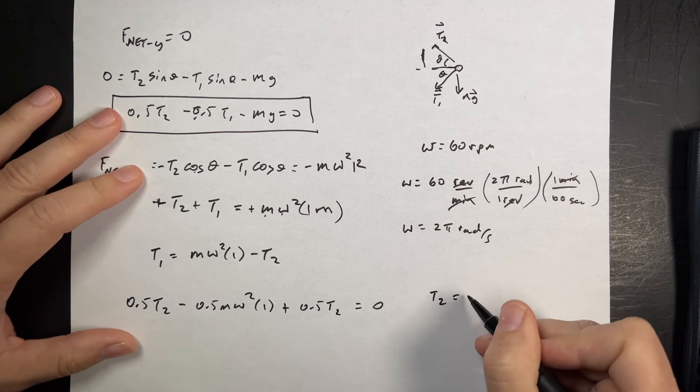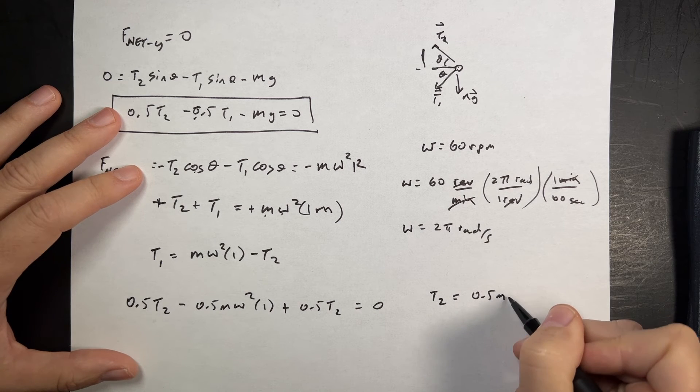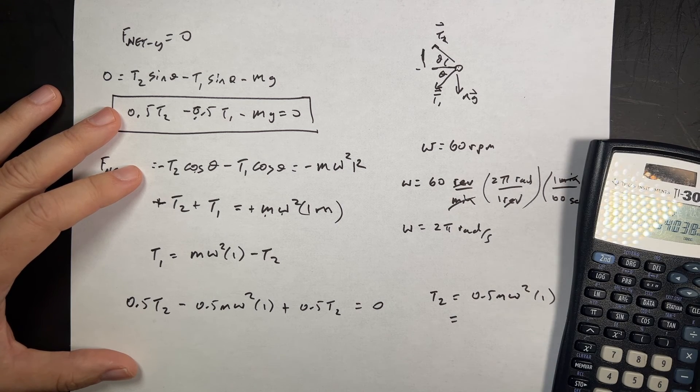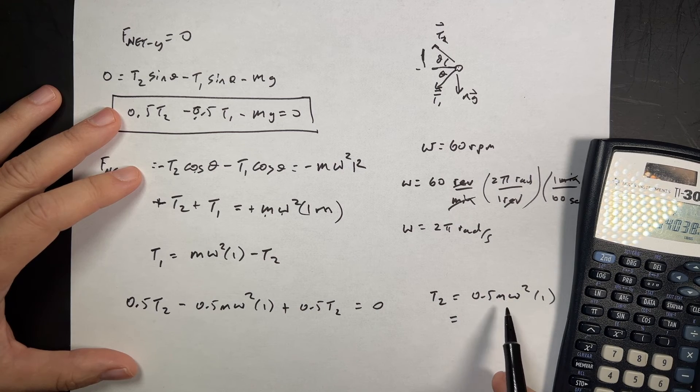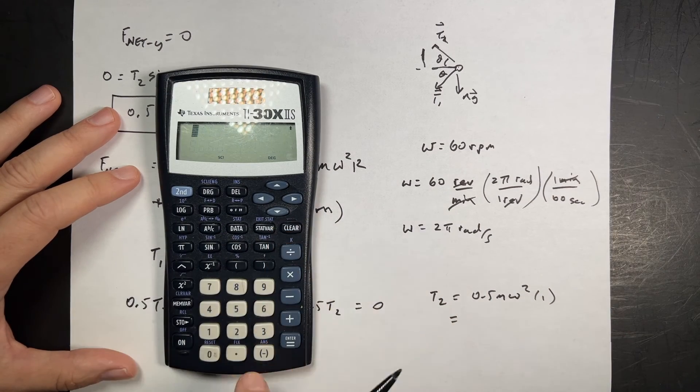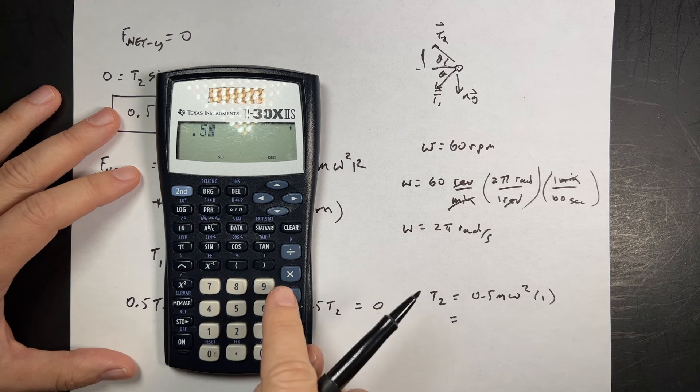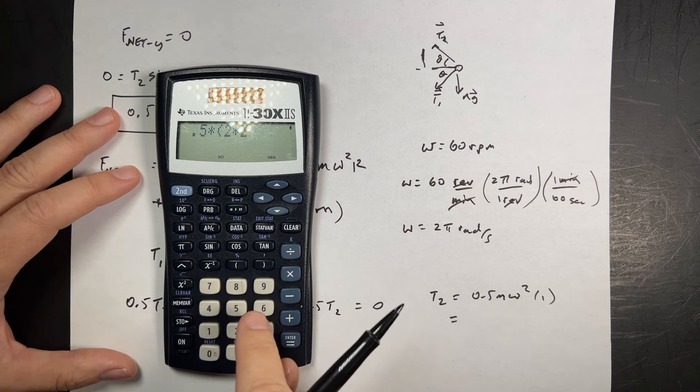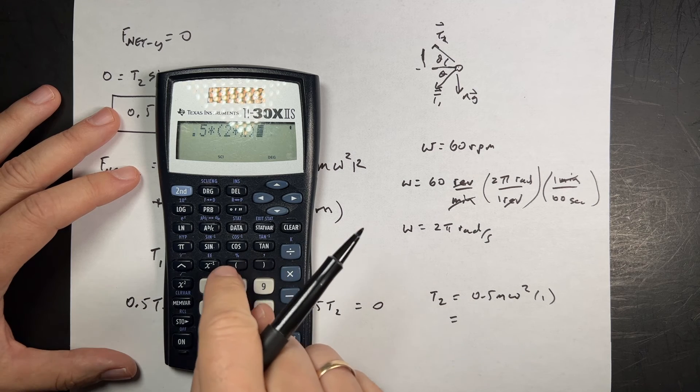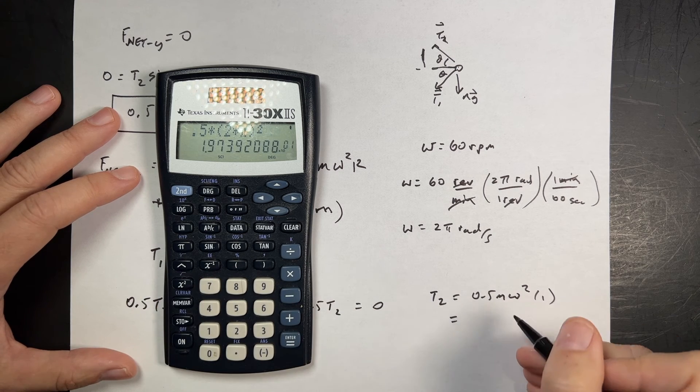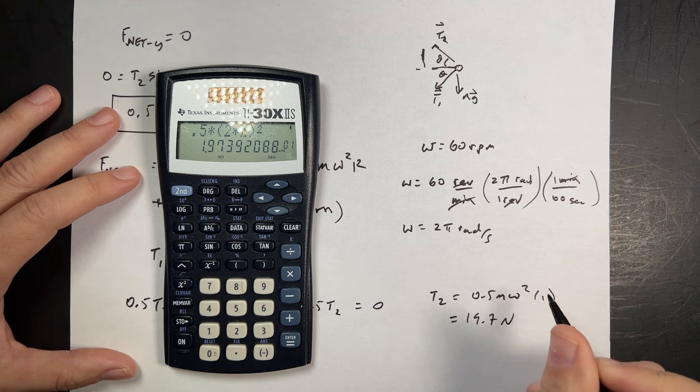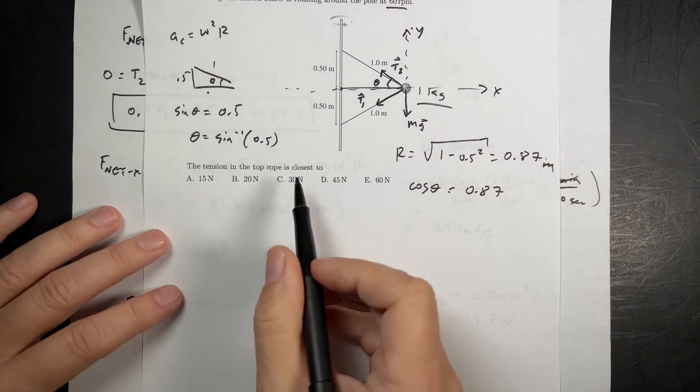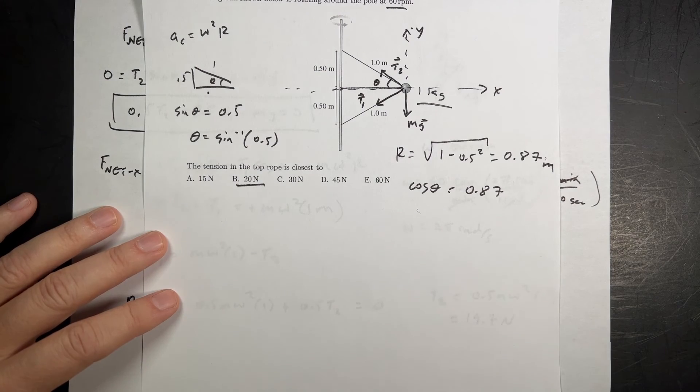I get T2 is going to be equal to 0.5 m omega squared times 1. So that's going to be, let's put that in our calculator. What was the mass? 1 kilogram? Oh, 1 times 0.5 times 2 pi squared. Okay, so let's put it in the calculator. So I get 0.5 times parentheses 2 times pi, close parentheses, squared. And I get 19.7 newtons. And if you look over here, that'd be B, closest to B. Okay.